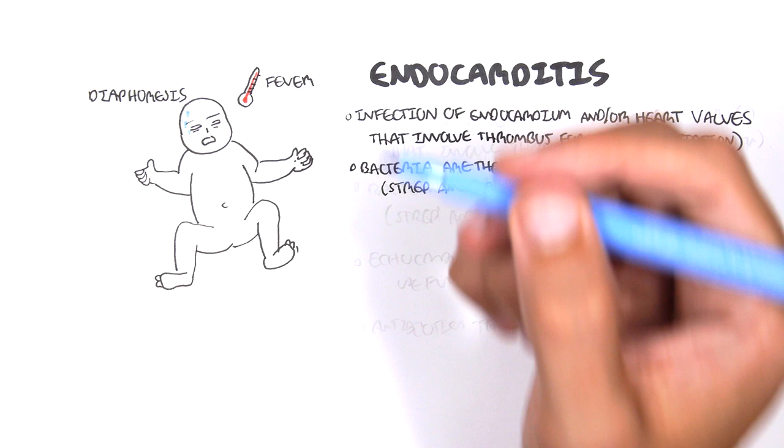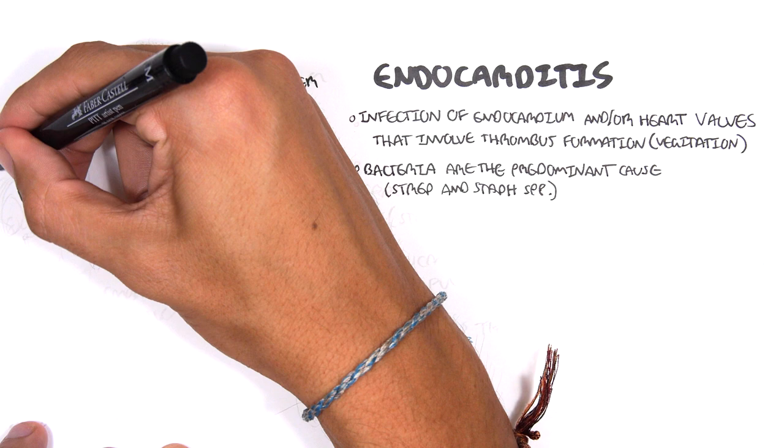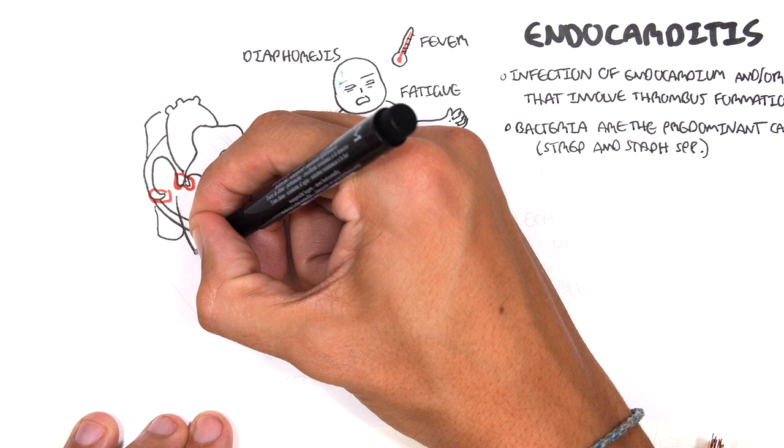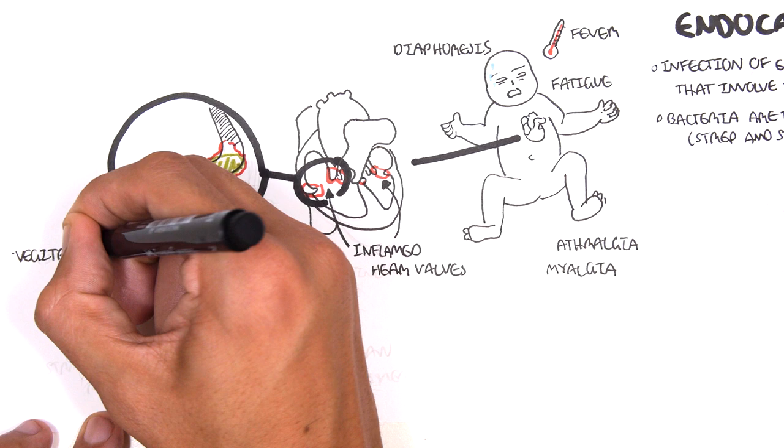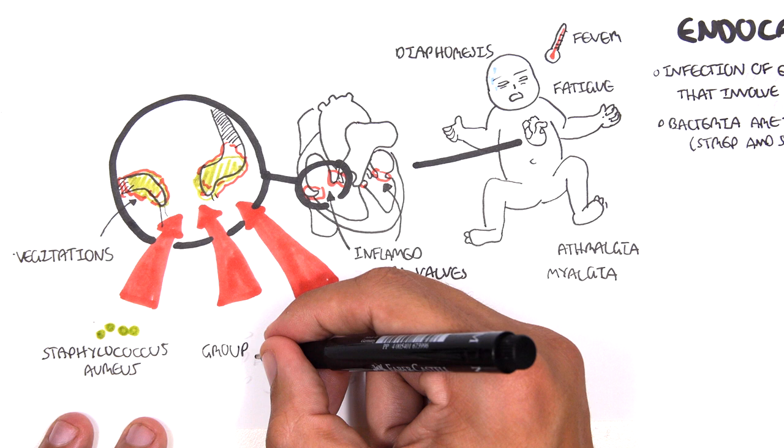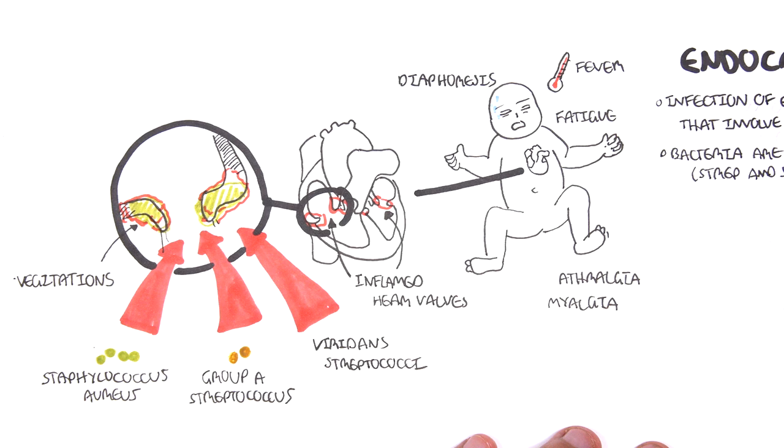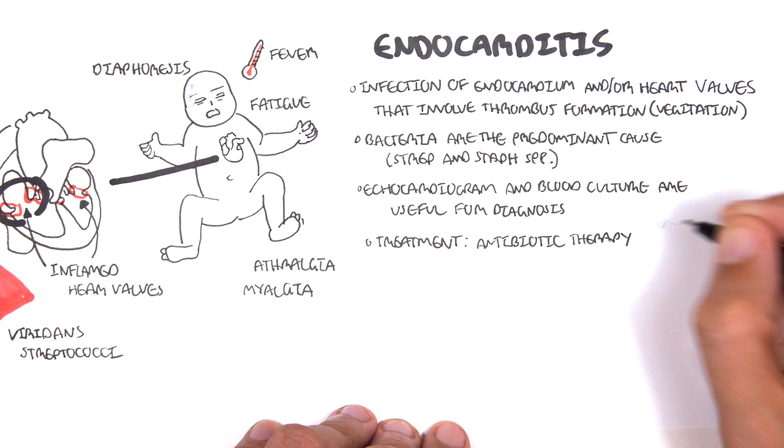In endocarditis, you get inflamed heart valves initially by the bacteria. The bacteria then grow in this environment causing vegetations. This can impair heart function and lead to valvular heart disease. The causative agents are mainly bacteria including Staphylococcus aureus, group A streptococcus, and Viridans streptococci. An echocardiogram and blood cultures are useful for diagnosis. Treatment involves antibiotic therapy empirically followed by targeted therapy once causative agent is identified.